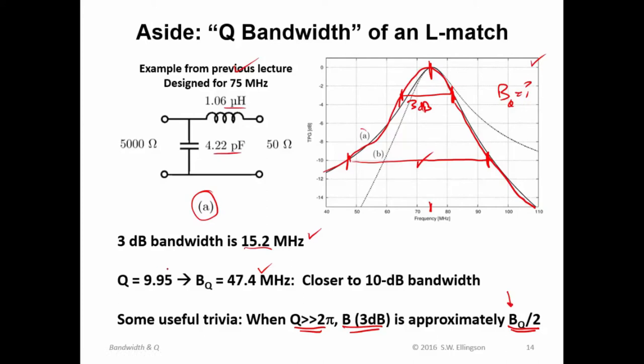Now, in this problem, the Q is only 9.95, and 2π is only about 6. So this relationship is not really effective yet. But when Q is big, like 100, then you will see that B sub Q, divided by 2, is about the 3 dB bandwidth.